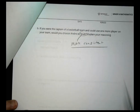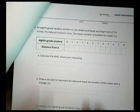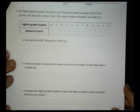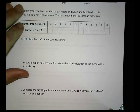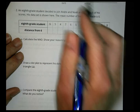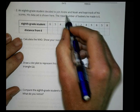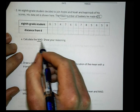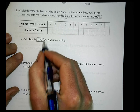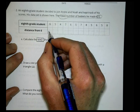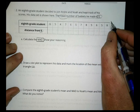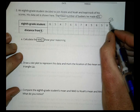Let's look at number two. An eighth grade student decided to join Andre and Noah and kept track of his scores. His data set is shown here. The mean for him is 6. Let's see if we can calculate his mean absolute deviation. To do that, I'm going to measure the distance from 6 for all of his values and then divide by 12, since there are 12 data points.